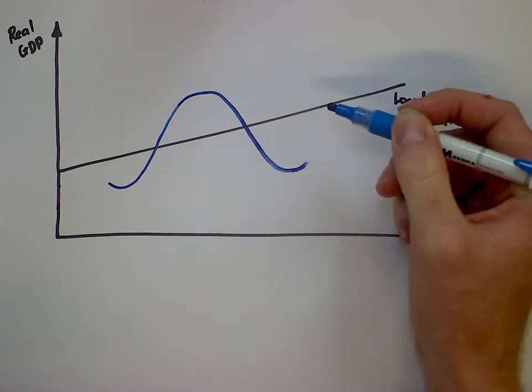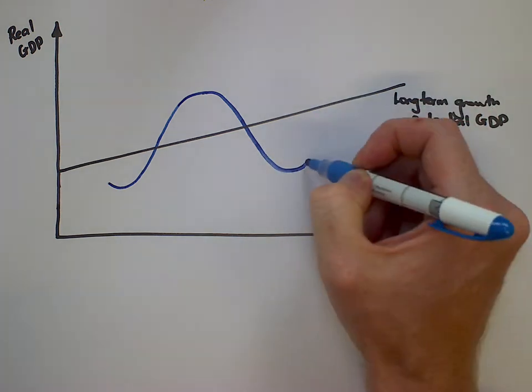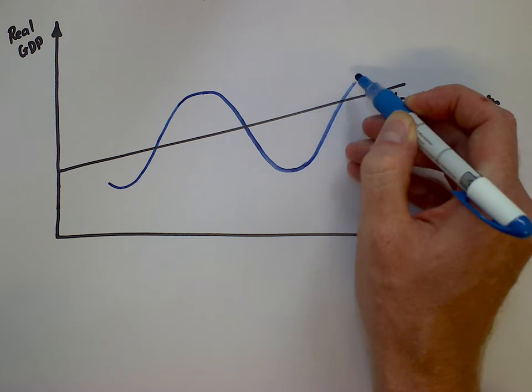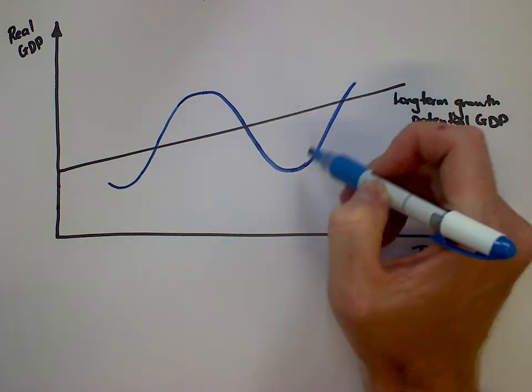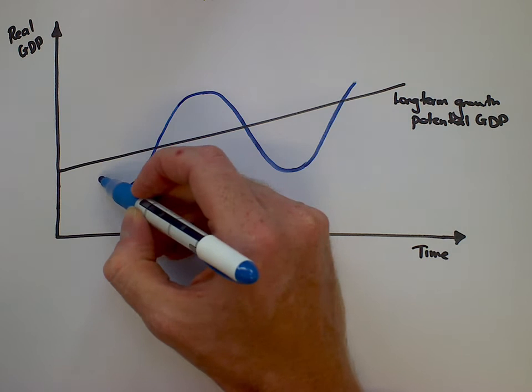Down into things we call recessions, troughs sometimes, depressions, and eventually this idea of an economic recovery. So this phase, the ups and downs, is something we call the business cycle.